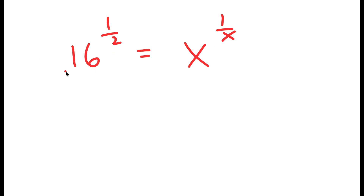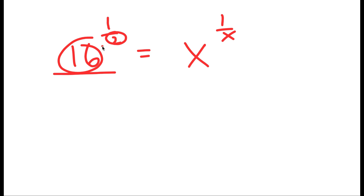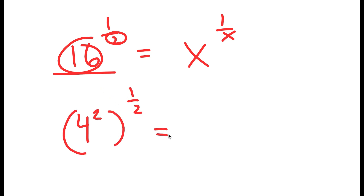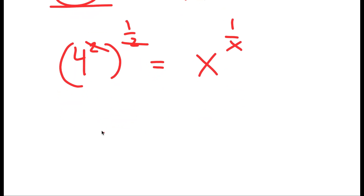My goal is to write the left side in the form n to the power of 1 over n, so I can match it to x to the power of 1 over x. Right now I have 16 to the power of 1 half. Since 16 equals 4 squared, I rewrite this as 4 squared to the power of 1 half. The exponents multiply: 2 times 1 half equals 1, so I'm left with 4 equals x to the power of 1 over x.